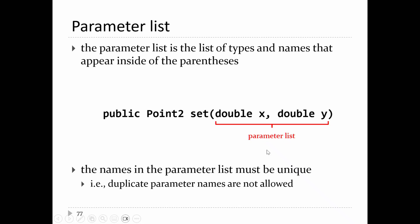The parameter list is the stuff inside the round brackets. These are variables that are local to the method — the variables X and Y are usable inside the body of the method. The rule is that names of parameters must be unique within the method, so X and Y can't both have the same name. Other methods in the class can have parameters named X and Y — that would be fine. Parameter names can also match field names; all that matters is that parameter names are unique for that particular method.